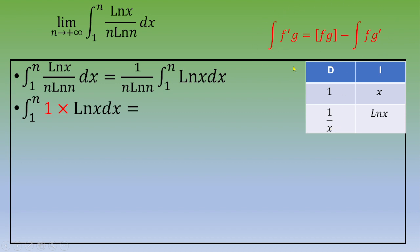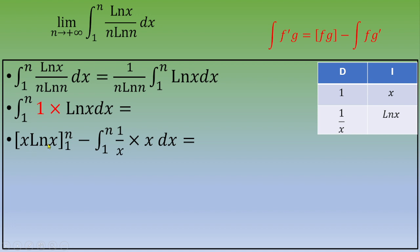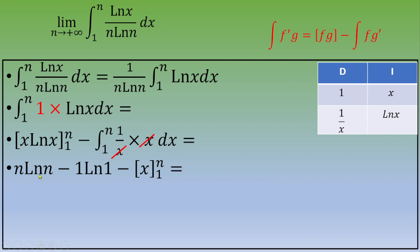Applying integration by parts, we get x·ln(x) evaluated from 1 to n, minus the integral from 1 to n of (1/x)·x dx. We can simplify by canceling x, giving n·ln(n) minus 1·ln(1) minus the integral from 1 to n of 1 dx.